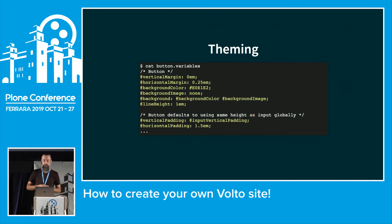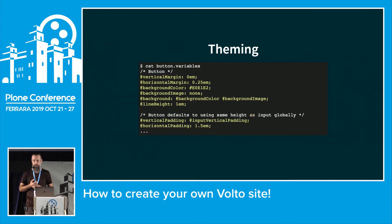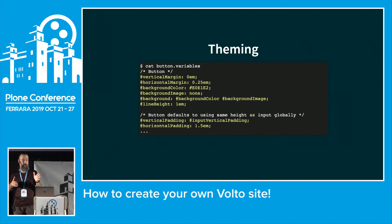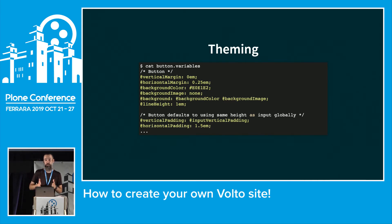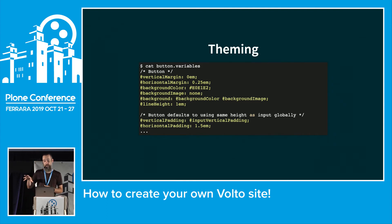Looking at a variables file, this is the one for the button — it displays variables like line height, background image, background color, etc. These are all the variables available from Pastanaga. There's a three-step theming story: the default theme, the Pastanaga theme selected in your package, and your own overrides — the variables are combined across all three.